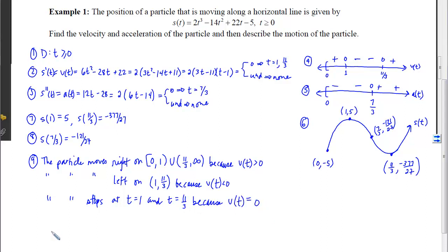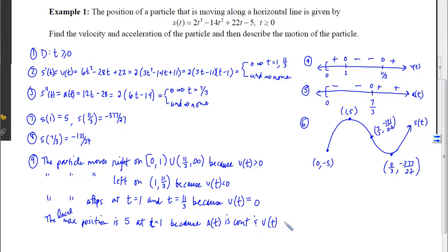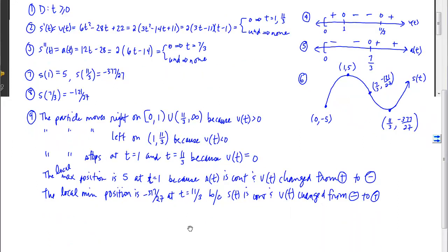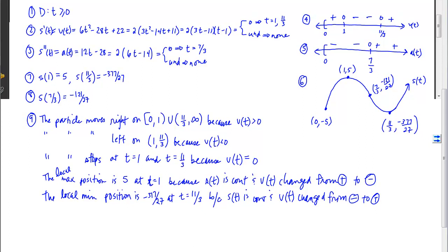We can also talk about max and min positions. The local max position is 5 at t = 1, because s(t) is continuous and v(t) changed from positive to negative. The local min position is −377/27 at t = 11/3, because s(t) is continuous and v(t) changed from negative to positive.